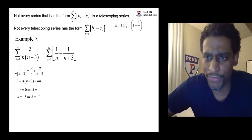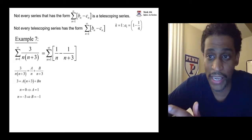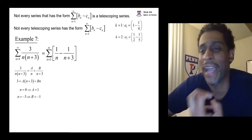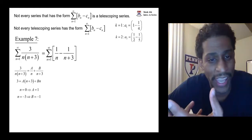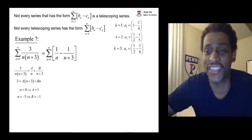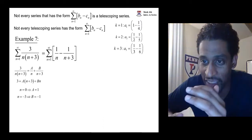When k is 1, we have 1 minus a fourth. When k is 2, a half minus a fifth. No cancellation. When k is 3, a third minus a sixth. No cancellation.